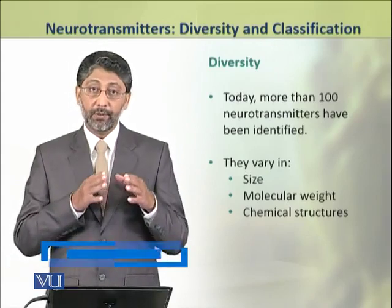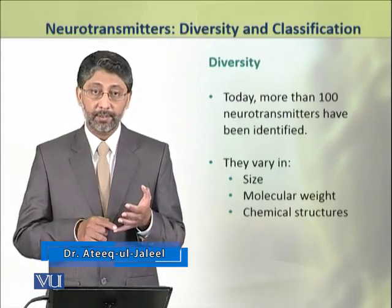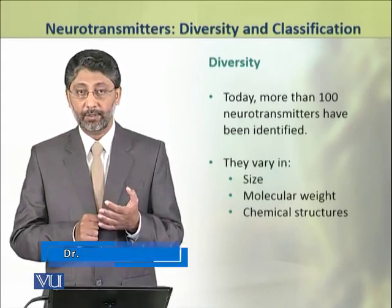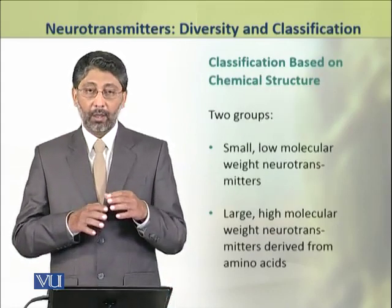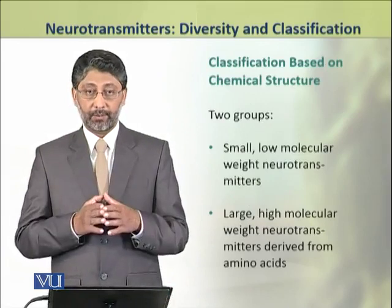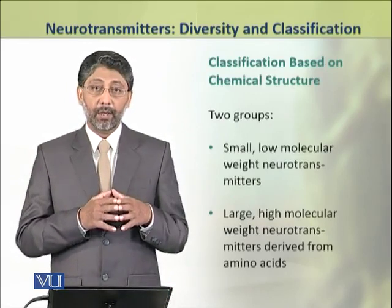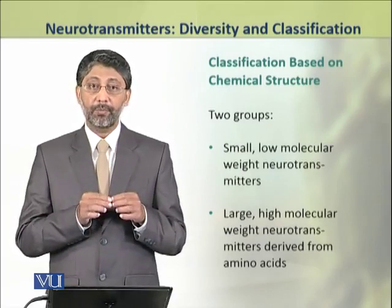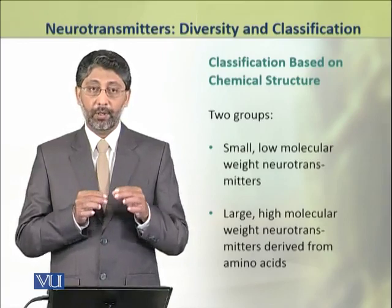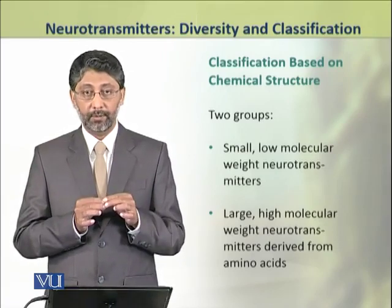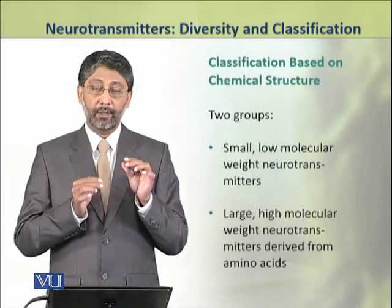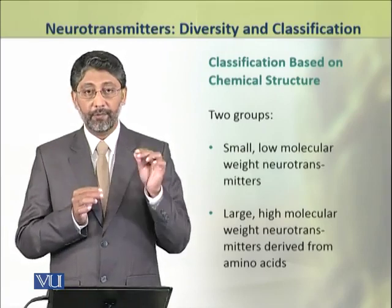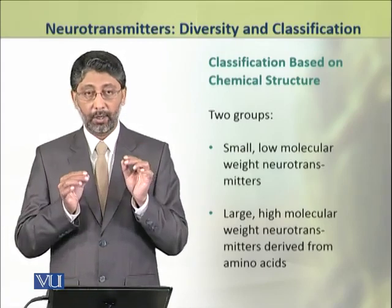These neurotransmitters vary in their size, in their molecular weights, and in their chemical structures. Based on their chemical structure, these neurotransmitters are classified into two groups. The first group includes small, low molecular weight neurotransmitters, while the second group contains larger sized, high molecular weight neurotransmitters, which are derived from amino acids.